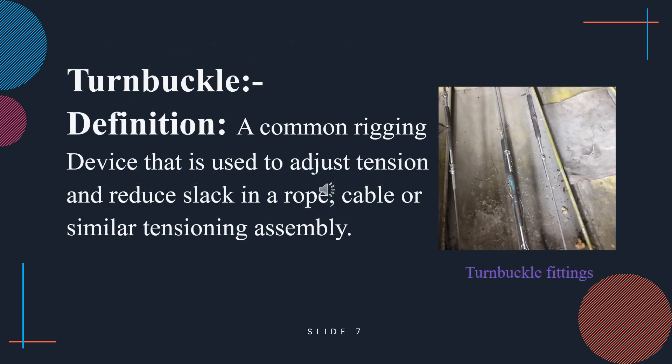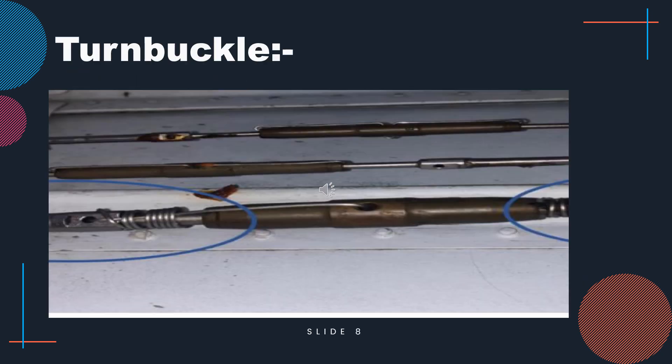A turnbuckle is a rigging device used for adjusting the tension or length of cables and reducing slack. Here is a picture showing the turnbuckle fittings, and a broader view of the turnbuckle.